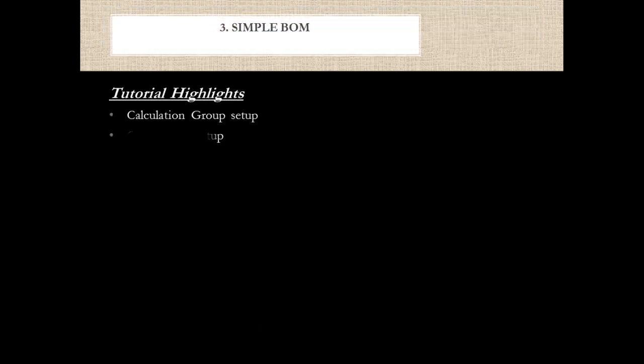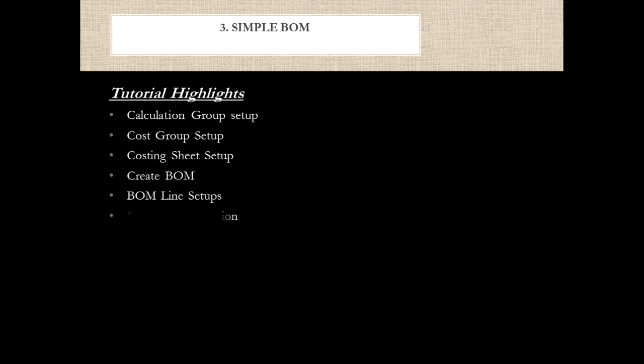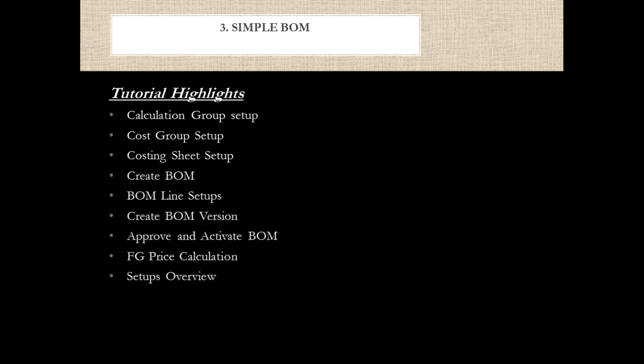This tutorial consists of the following: calculation group setups, cost group setups, costing sheet setup, creating a BOM, BOM line setups, creating BOM versions, approve and activate BOM, and finish good price calculation and setups overview. The finished good price calculation in this scenario only consists of the raw materials, so we will see how to derive the finish good price.